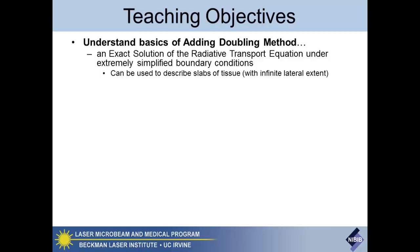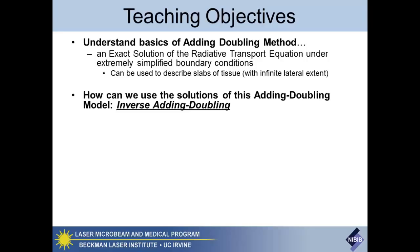The first objective is to understand what the adding-doubling method is. It's compelling because it is an exact solution of the radiative transport equation — a very difficult equation to work with — but under very simplified conditions, adding-doubling is an exact solution to that. This approach looks at slabs of tissue: what light goes into tissue, what goes through it, and what comes back out.